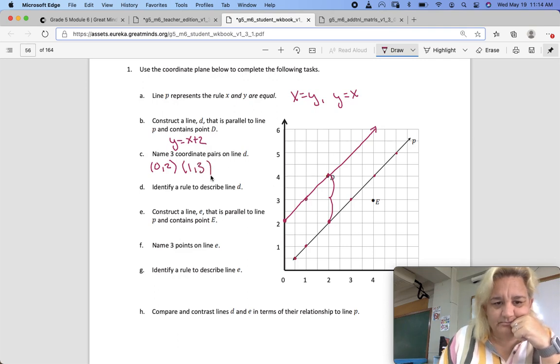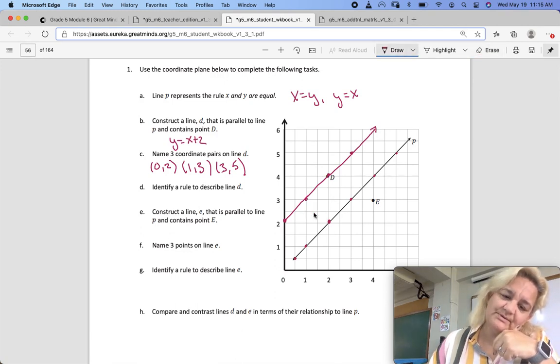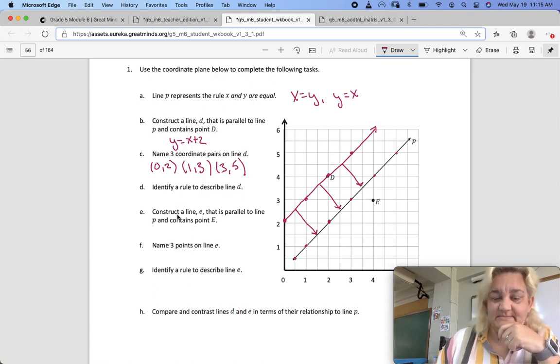Let's try one more. X equals 3, Y equals 5. So what we've done is we've just created a parallel line that is two units away. So all we did was we added 2 to the X coordinate. The rule would be Y equals X plus 2.